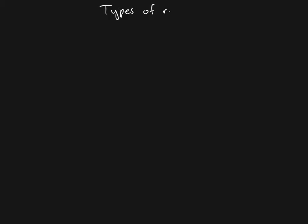In the last video we talked about the idea of reliability — having a reliable measure means the measure gives you consistent results. But there are a number of different ways in which a measure can give consistent results. Just like with different types of validity, there are different types of reliability. There are essentially four major types of reliability commonly seen in scientific research.